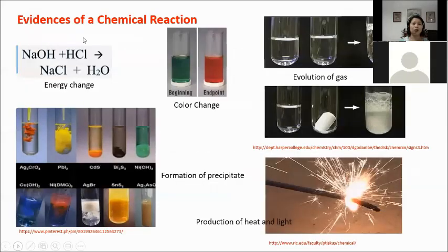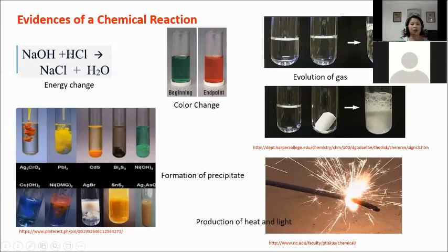How will we know that there is a chemical reaction? First evidence is energy change. For example, sodium hydroxide and hydrochloric acid are both colorless liquids. If you place them in test tubes of equal quantity, they look the same. It is very important to label them. When mixing NaOH with HCl, you won't see a visible color change — only an increase in volume since you added one colorless liquid to another.